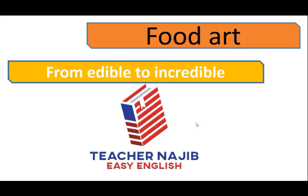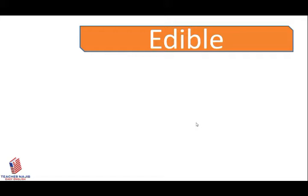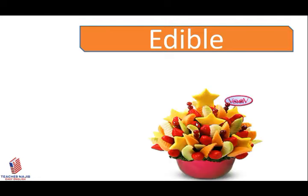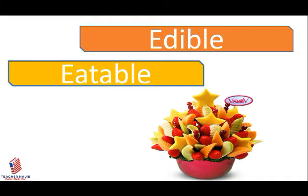The first vocabulary we have is 'edible.' What is edible? Edible means something related to food — it is eatable. You can say eatable or you can say edible. It means something that is meant to be eaten, something that we want to eat.